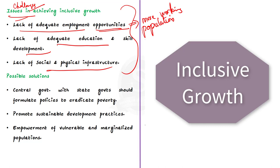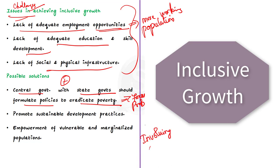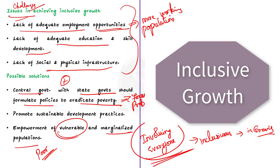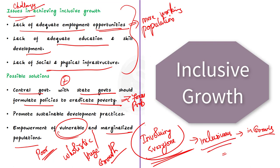Now let us talk about the possible solutions. The central government, along with the help of the state governments, should formulate policies to eradicate poverty, which is the foremost problem faced by India in achieving inclusive growth. The concept of inclusive growth means involving everyone in the nation's economic and financial growth. The government should also promote sustainable development practices keeping in mind future generations, and ensure that inclusive growth helps in the empowerment of vulnerable and marginalized populations. Only by including everyone in the society will you be able to achieve holistic growth, and thus we can conclude that achieving inclusive growth is equal to achieving the nation's growth.